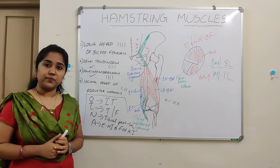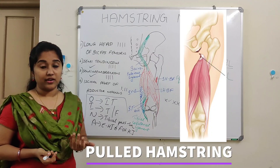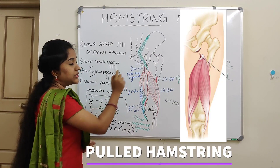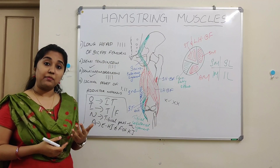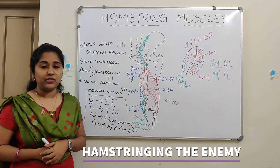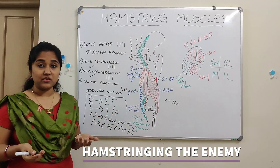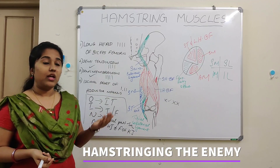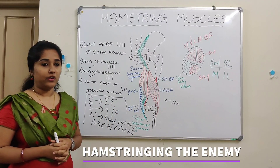What are the applied aspects of hamstring muscles? The first condition is 'pulled hamstrings' — a very painful condition. It occurs usually in professional runners because running requires extension of the hip joint and flexion of the knee joint. It occurs when the attachment of the hamstrings at the ischial tuberosity is torn. Another term is 'hamstringing the enemy' — in ancient times, soldiers used to slash the back of the thigh of horses of the opponent so the horse and rider would fall down. If the hamstring muscles are paralyzed, the person tends to fall forward because the gluteus maximus alone cannot maintain upright posture when the hamstrings are paralyzed.